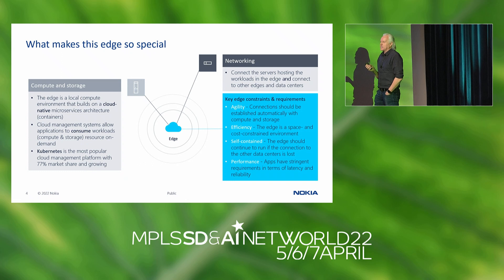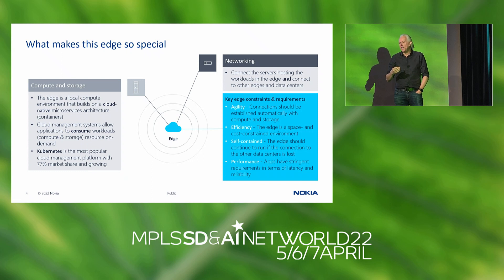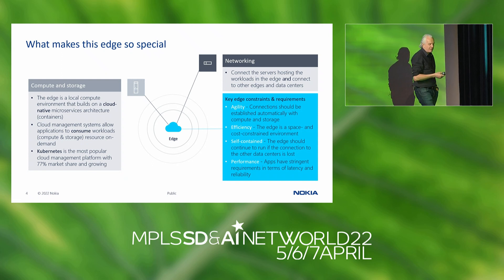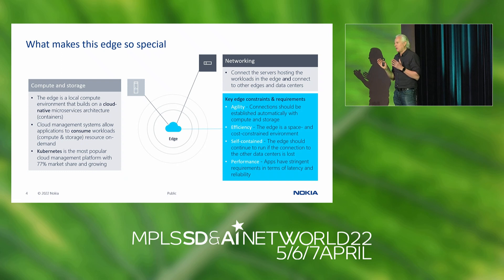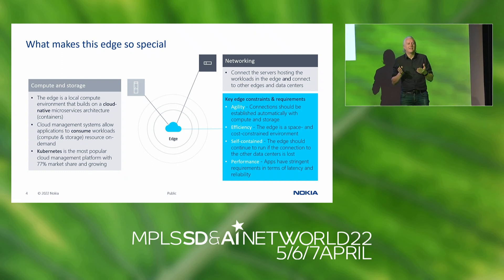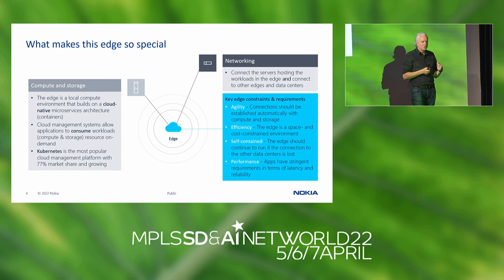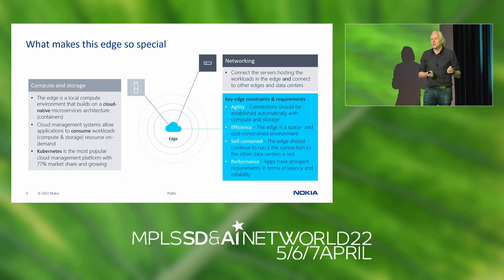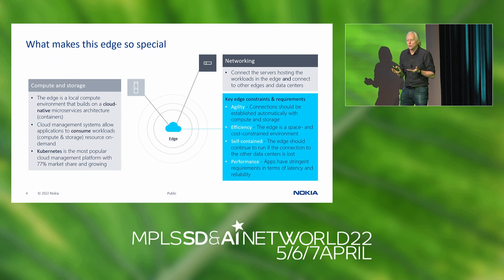What makes the edge special? First of all, I think we have to admit that there is no edge without a network — the network is an essential component to actually connect the edge to the rest of the network. But more importantly, edges are typically characterized with smaller footprints, and the resources consumed by applications are typically very small. You have to design in order to take that into account, so that if you consume a CPU for infrastructure that cannot be used for an application, it's actually bad from a TCO point of view.